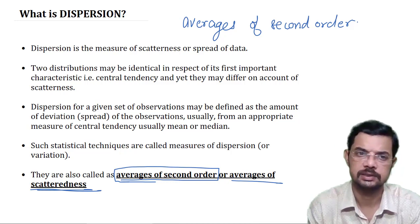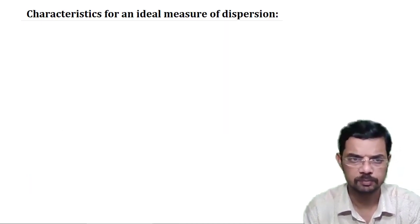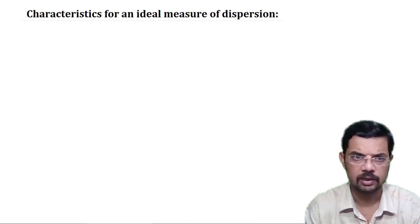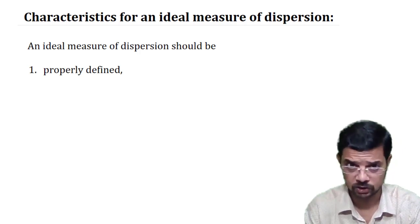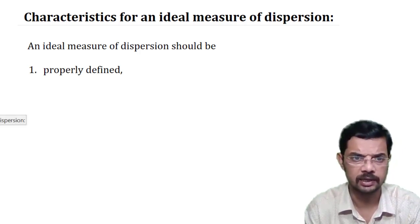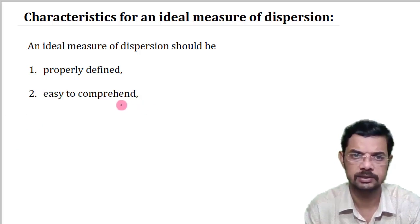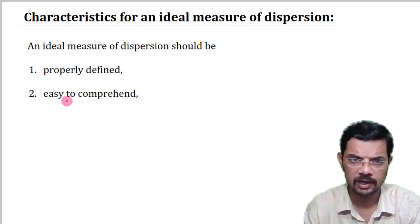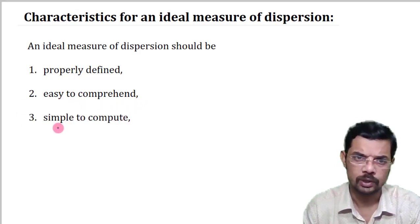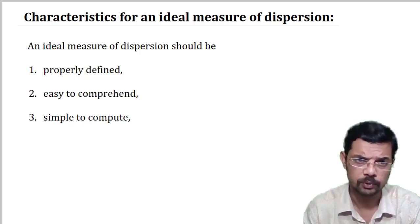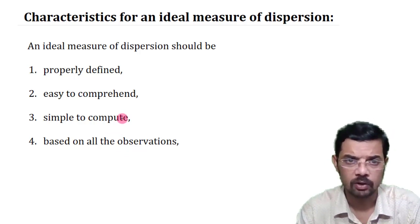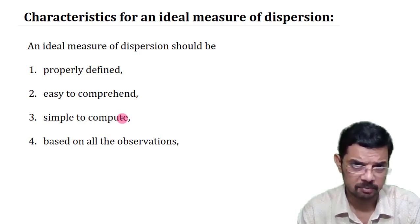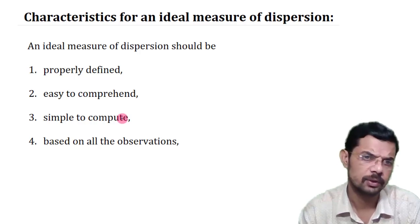Now we shall discuss the characteristics of an ideal measure of dispersion. First, the ideal measure should be properly defined so that everybody can understand it in the same sense. Second, it should be easily comprehensible or easily understood. Third, it should be easy to calculate or simple to compute. Fourth, it should be based on all the observations. These are ideal characteristics and may not be satisfied by every measure.